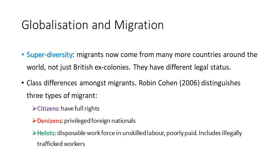There is also a class element to consider. Robin Cohen distinguishes three different types of migrants. First, citizens who have full rights — for example, someone from France with a French passport has every right to come and live, settle, and work in the United Kingdom. Second, denizens, who may not have full rights but may be privileged in some way — perhaps they are middle or upper class, a wealthy business person. Some governments may consider it in their interest to grant such people some form of status to come and live and work in the UK because they will add money to the tax coffers.